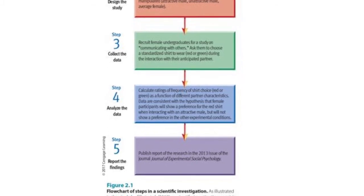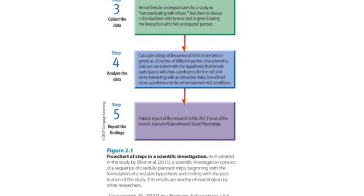In step four, the researchers analyzed the data. They collected ratings of frequency of shirt choice — red or green — as a function of different partner characteristics. Data are consistent with the hypothesis that female participants will show a preference for the red shirt when interacting with an attractive male, but not in the other experimental conditions. In step five, researchers reported the findings, published in 2013 in the Journal of Experimental Social Psychology.